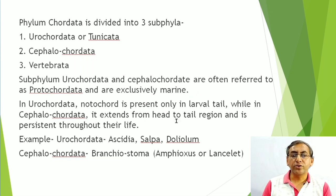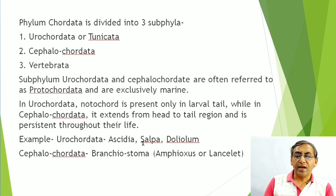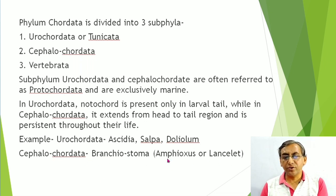Examples of Urochordata: Ascidia, Salpa, Doliolum (as per NCERT). Example of Cephalochordata: Branchiostoma (Amphioxus/lancelet). In Cephalochordata, the basic chordate characters are present and persistent throughout life — both in larval and adult stages.